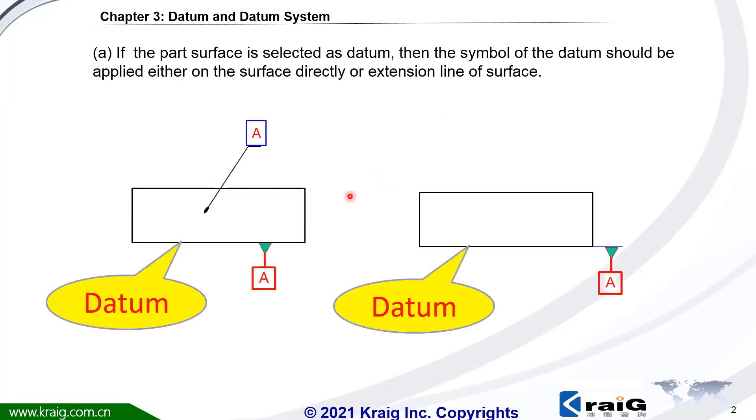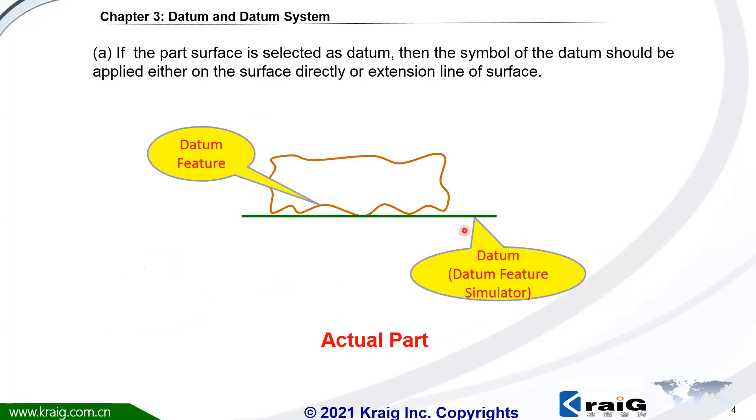First, we can specify the datum letter directly to the surface of the feature. Here means the bottom surface is datum A. Next, we can specify the datum letter to the extension line from the datum feature. This datum is still the bottom surface, and we have learned how to find this datum simulator from datum feature.